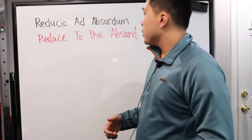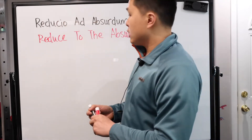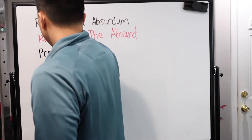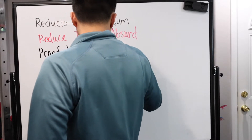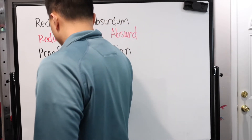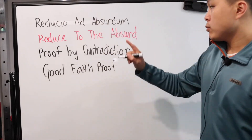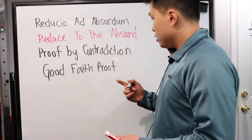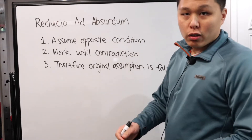There are actually several names for this, and you'll see them in different textbooks and different books. You have the Latin, of course, and then in English it also has different names. You have 'reduce to the absurd,' or you also have 'proof by contradiction.' Another one, which threw me off in the beginning because I had no idea what it meant, was 'good-faith proof.' These are all different names, and the strategy with this proof is the same thing. Let's talk about the strategy.